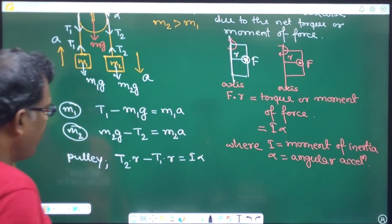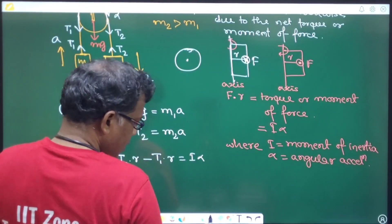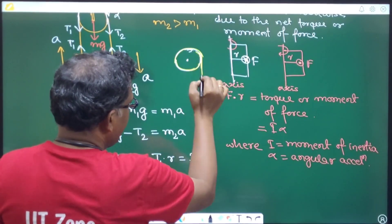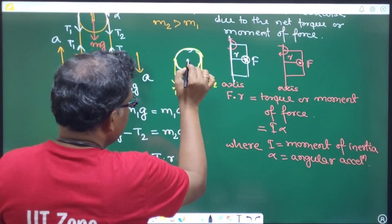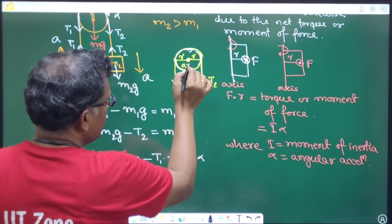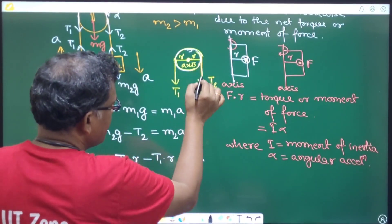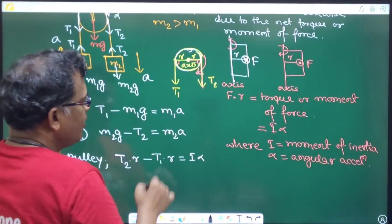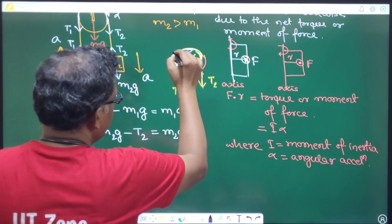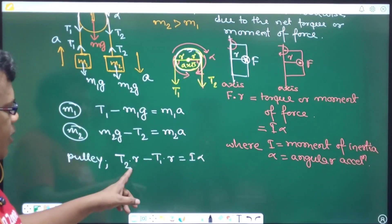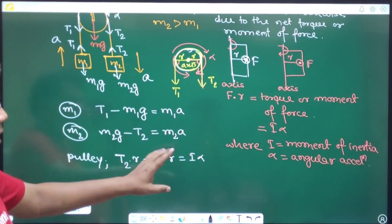Looking at the FBD of the pulley separately: the string passes over the pulley with tension T2 on one side and T1 on the other. The center is the axis, and both sides have radius r. About this axis, T2·r is the clockwise torque and T1·r is the anticlockwise torque. Since the pulley rotates clockwise with angular acceleration alpha, the net torque equation is T2·r - T1·r = I·alpha.